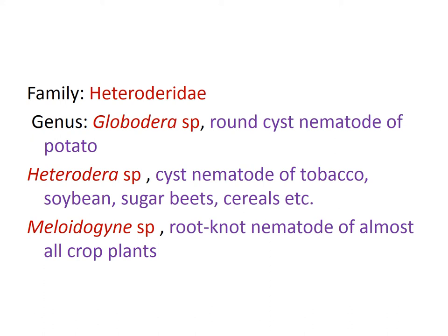Then Heteroderidae — all the nematodes in this family are cyst-forming nematodes. One important genus is Globodera, the golden cyst nematode, mostly on potato. Globodera rostochiensis and Globodera pallida are the important species. Heterodera is another type of cyst nematode which is lemon-shaped. It infects tobacco, soybean, sugarcane, cereals, and even rice — for example, Heterodera oryzicola infects rice. Heterodera avenae is the cereal cyst nematode infecting wheat.